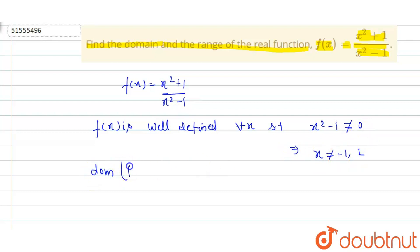So, if my domain, the domain of f is the whole real line R. Whole real line R except the points minus 1 and 1.